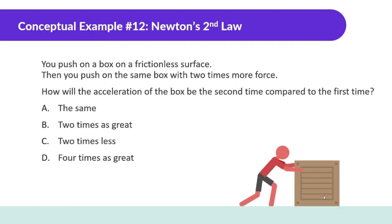You push on a box on a frictionless surface, then you push on the same box with two times more force. How will the acceleration of the box be the second time compared to the first time? If this force increases by a factor of two, the other side of the equation must also increase by a factor of two. Since it's the same box, the mass won't change, so the acceleration increases by a factor of two — it accelerates two times more.